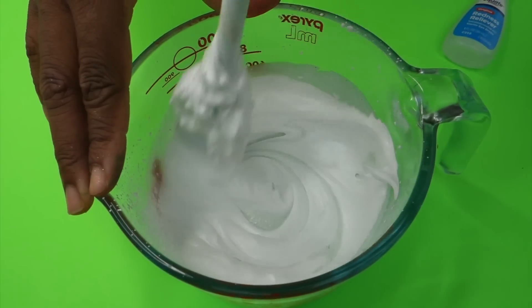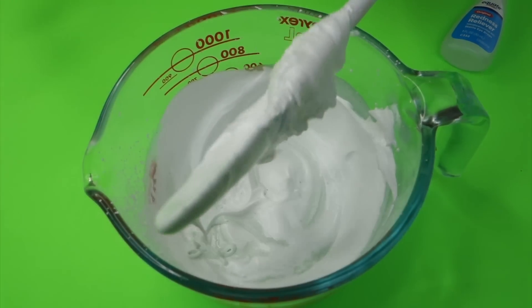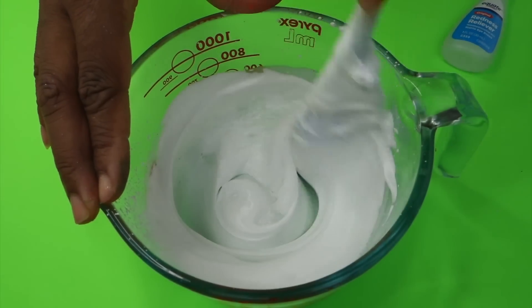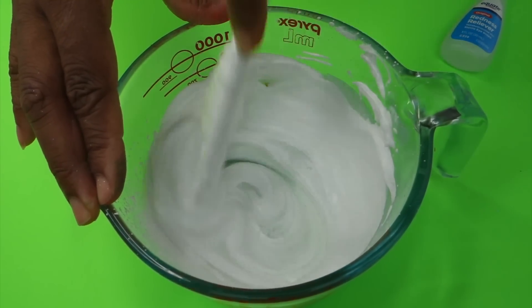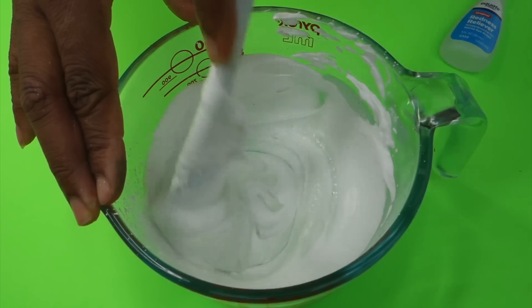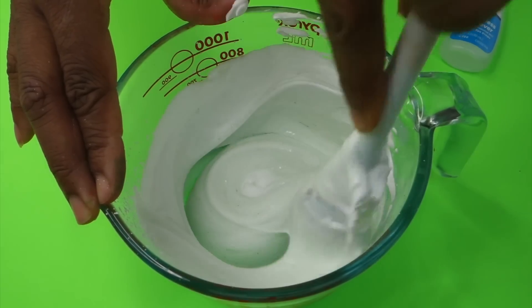Now we're adding shaving cream. Because without shaving cream, it would not be fluffy. You really don't need it, but I just like it. And don't use a lot. I just honestly cover the top of my slime. I mean, cover the top of my mixture with the shaving cream and mix it in.